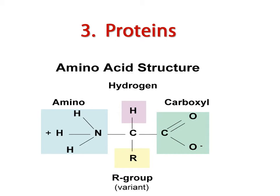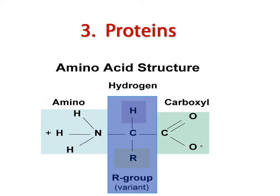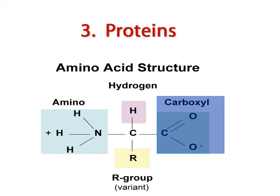The building blocks of proteins are the amino acids, which are made up of the amino group, a central carbon bonded to a hydrogen atom and a radical group, and ending with a carboxylic acid ending.